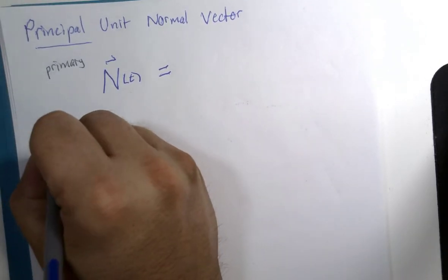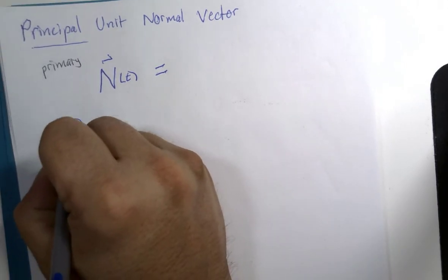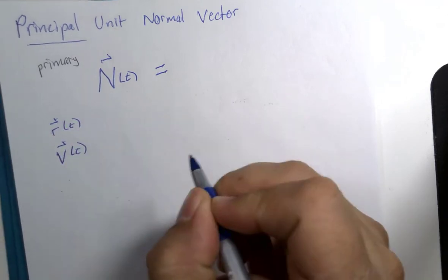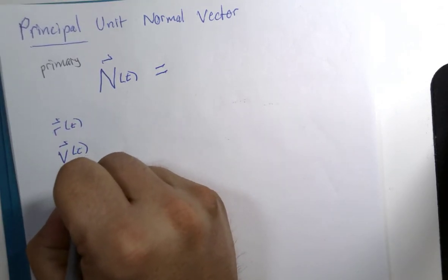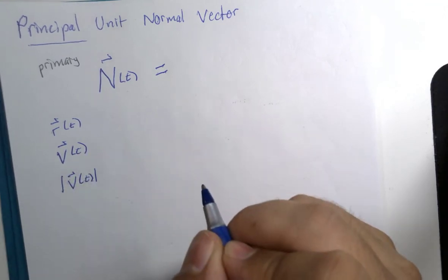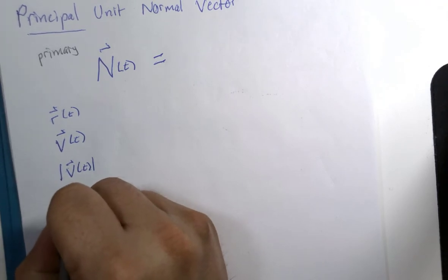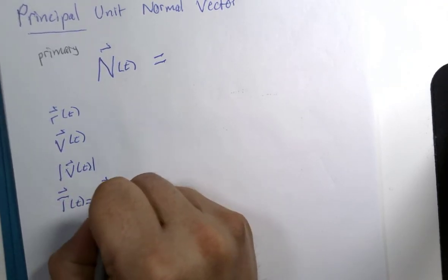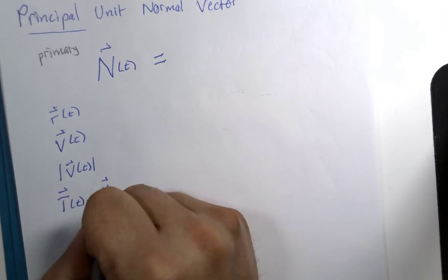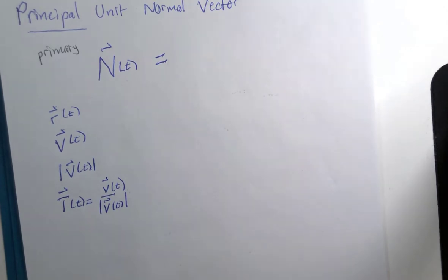Remember, we have position, velocity which is the first derivative, speed the magnitude of the first derivative, and the unit tangent vector which you find by taking the velocity and dividing by its magnitude. That's how you make a unit vector.